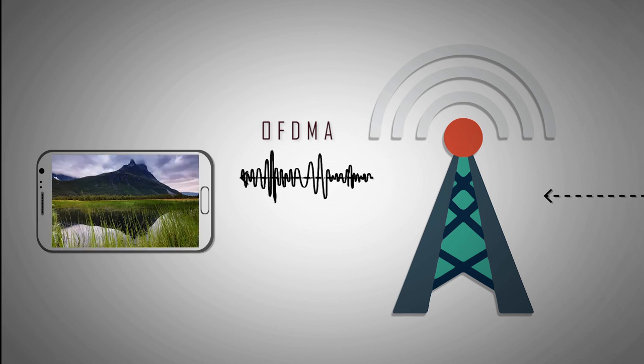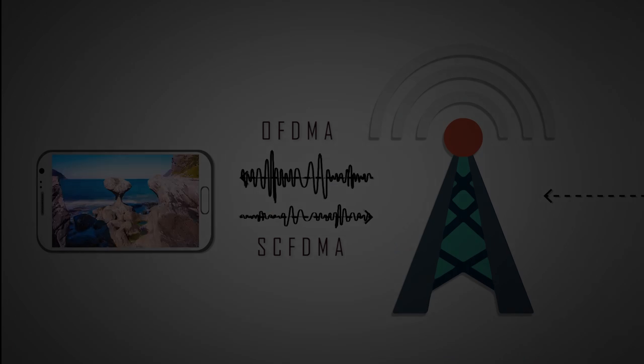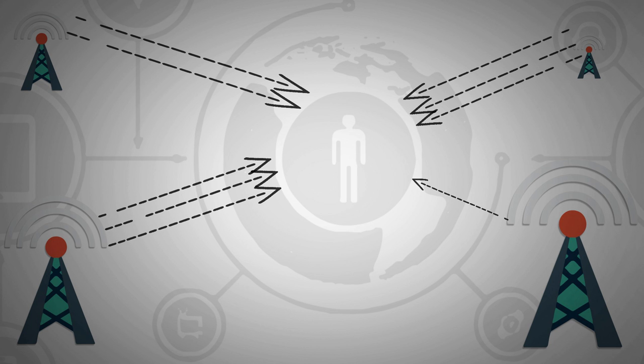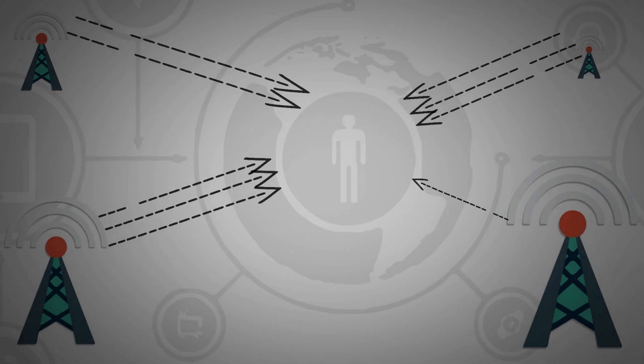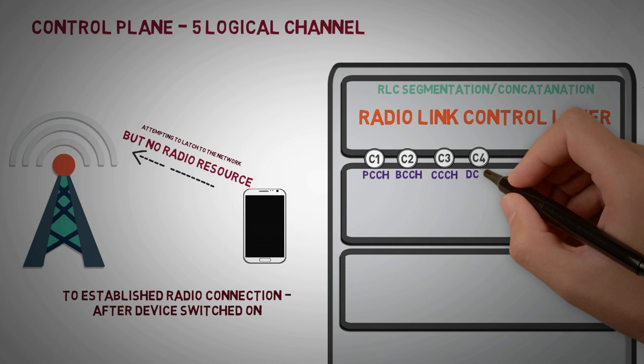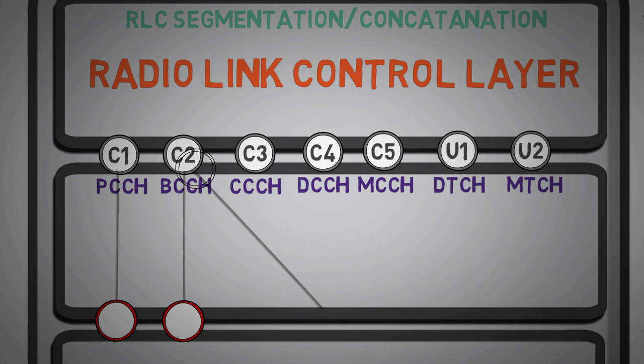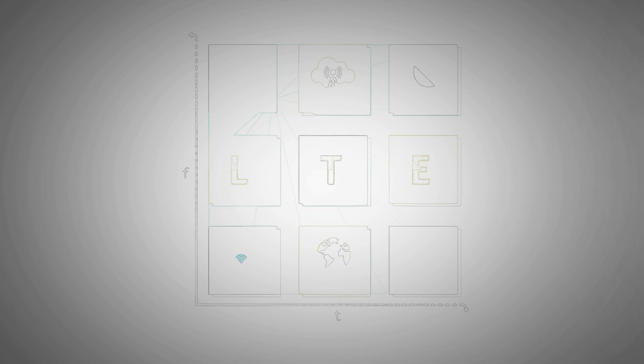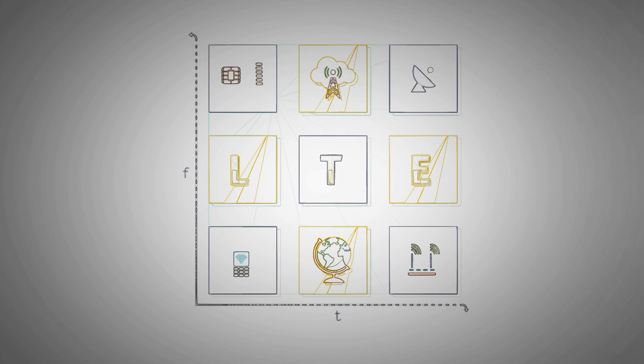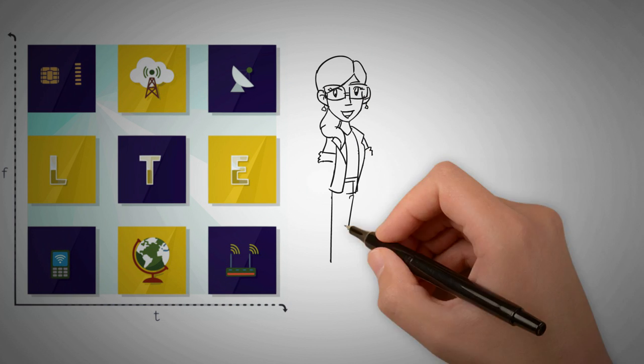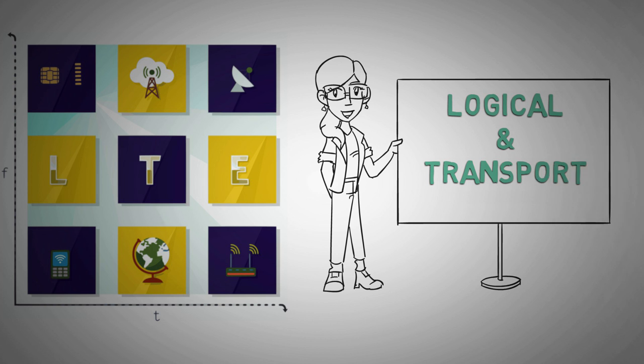Previously we have seen how data is transmitted over the air. But these data are transmitted in multiple streams for better efficiency. But how are these signals classified? Who maps them to the corresponding channel? Hello everyone, welcome back to Fundamentals of 4G. Today we will discuss logical and transport channels.